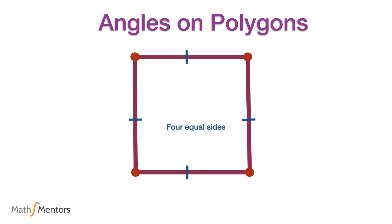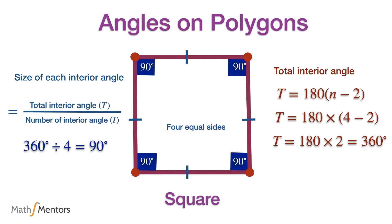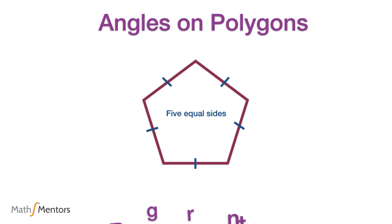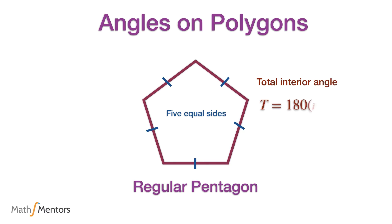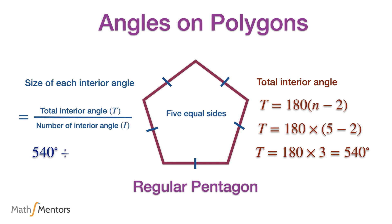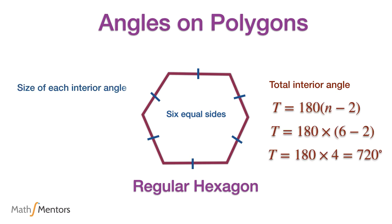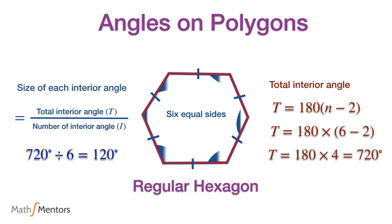A regular polygon made out of four sides is a square. All sides are equal and each interior angle is 90 degrees, with total interior angles adding up to 360 degrees. A regular polygon with five equal sides is called a regular pentagon — all angles are equal, they add up to 540 degrees, and each angle is 108 degrees. Similarly, a regular hexagon has six equal sides, total interior angles of 720 degrees, and each interior angle is 120 degrees.